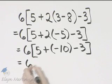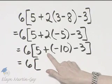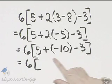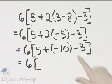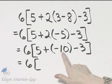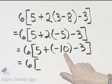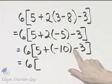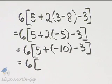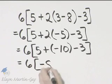That's 6 bracket, 5 plus negative 10 minus 3. Addition and subtraction, we add or subtract from left to right. 5 plus negative 10, that's negative 5, and negative 5 minus 3, that's negative 8.